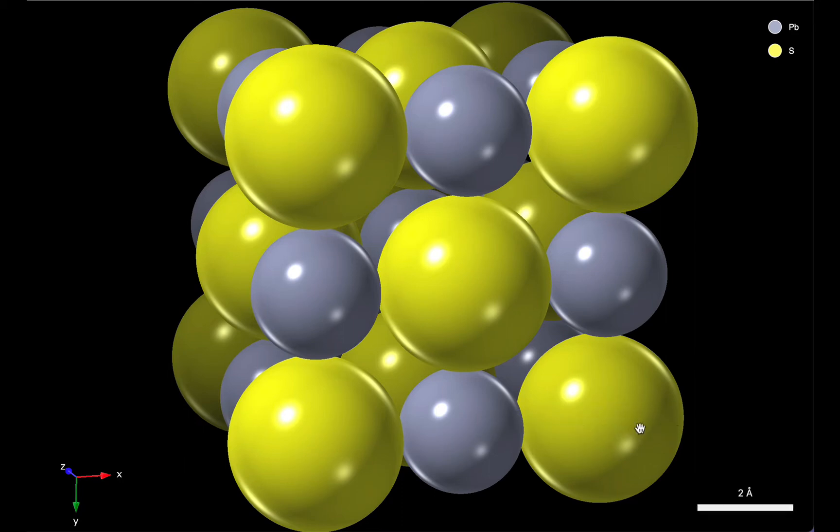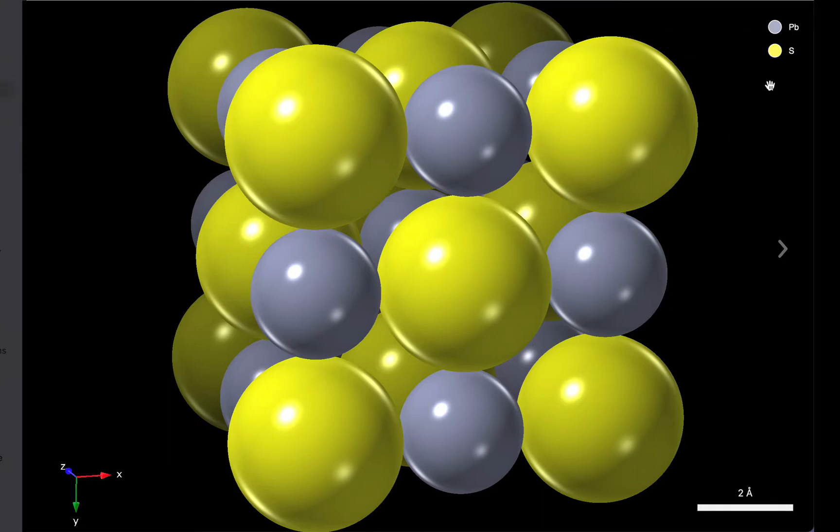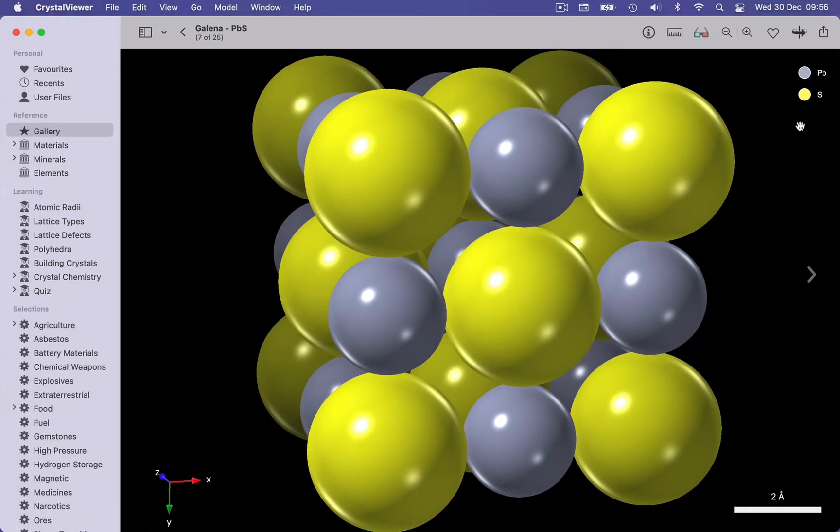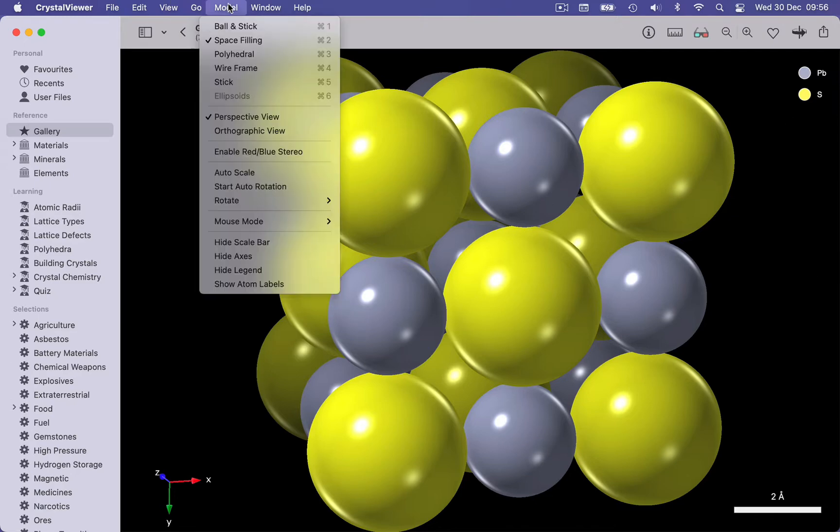So how did I know which atom was which? Well, in the top right-hand corner of the window, we have a legend, which helps us identify which colour corresponds to which atom in the structure. And notice that we can show or hide the axes, the scale bar, and the legend by using the model menu.